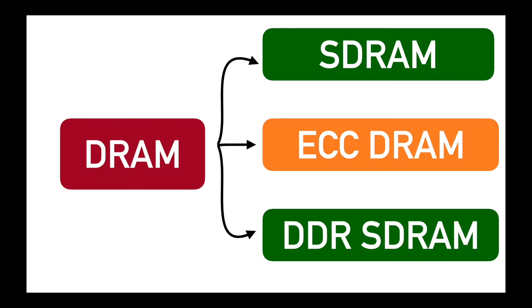There are mainly three types of DRAM: SDRAM, double data rate SDRAM, and error correction code DRAM.